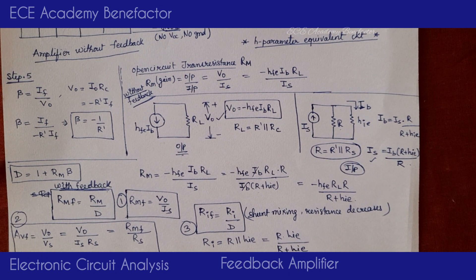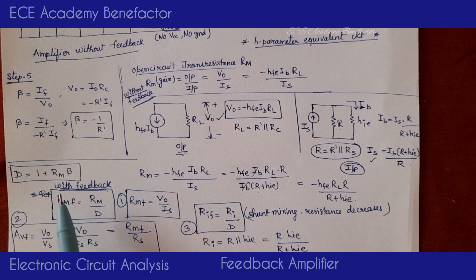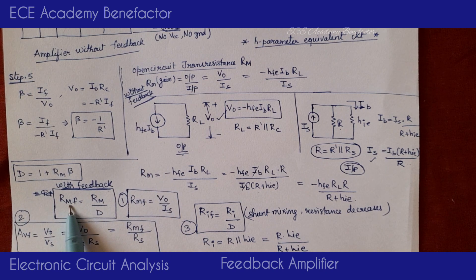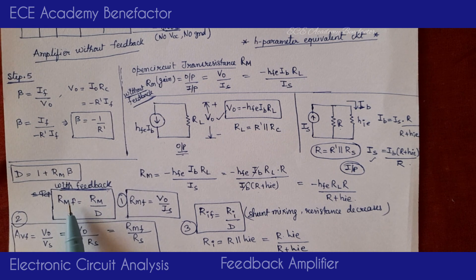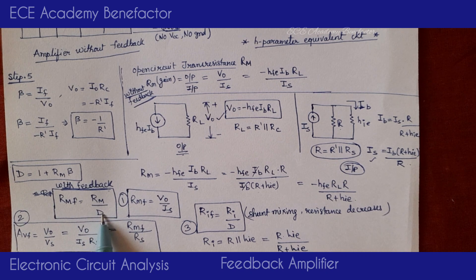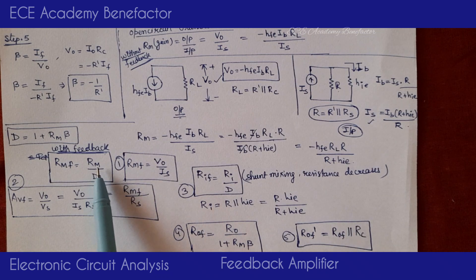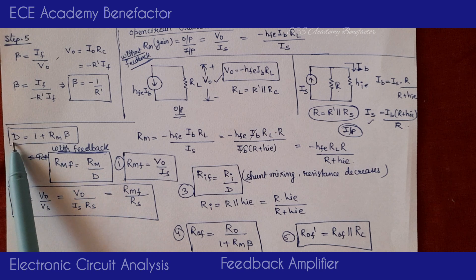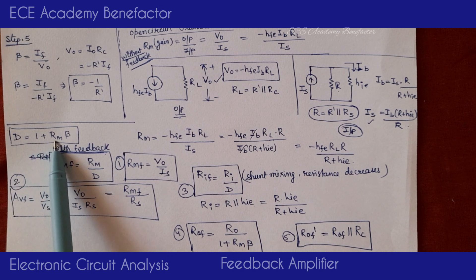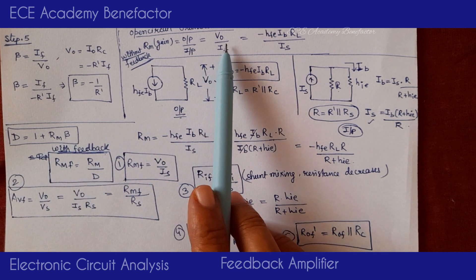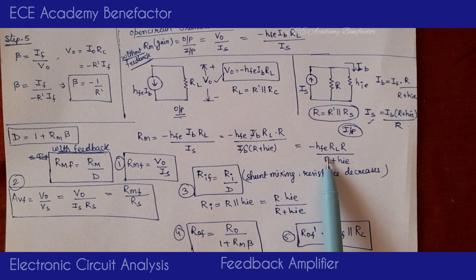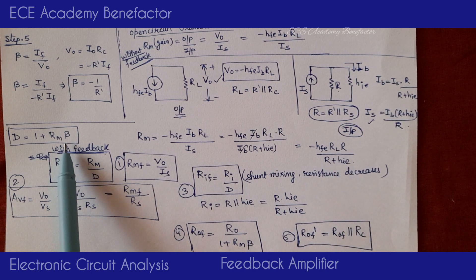Next, we find RMF — transresistance gain with feedback. RMF = RM / D, where D = 1 + RM·β. RM has already been found. Now we need to derive β. Beta is the feedback factor equal to the feedback parameter divided by the output — here IF / V0.